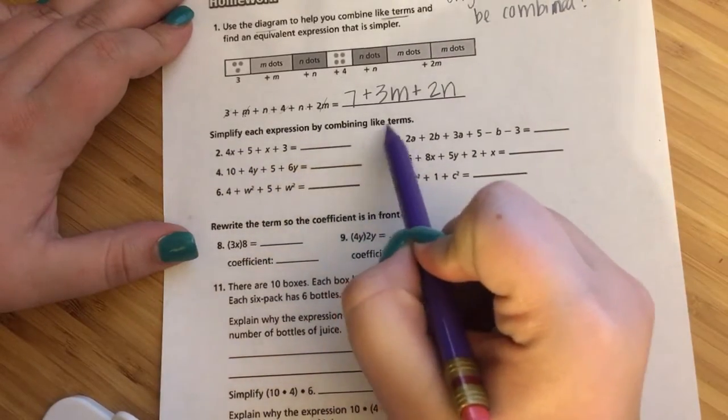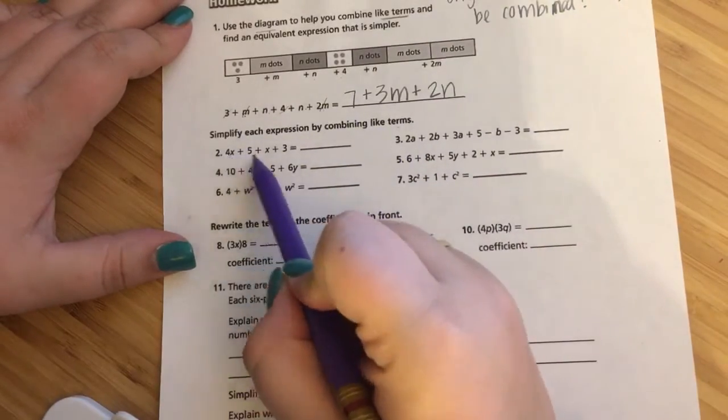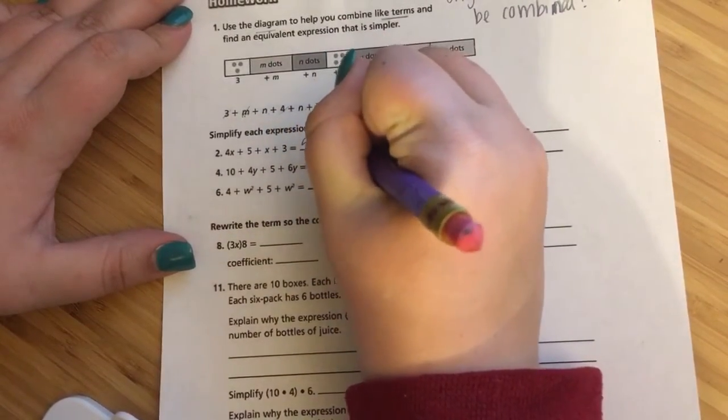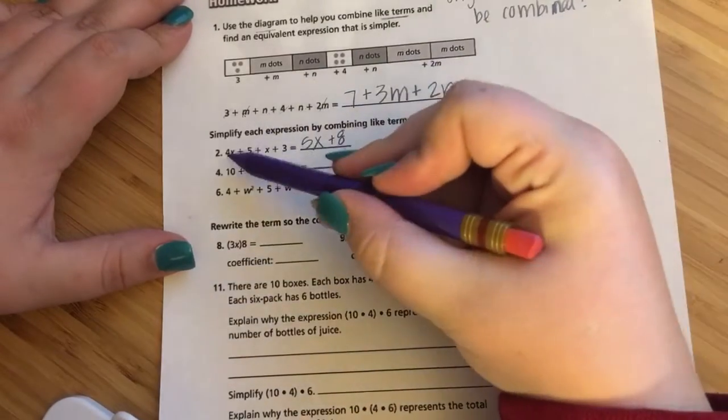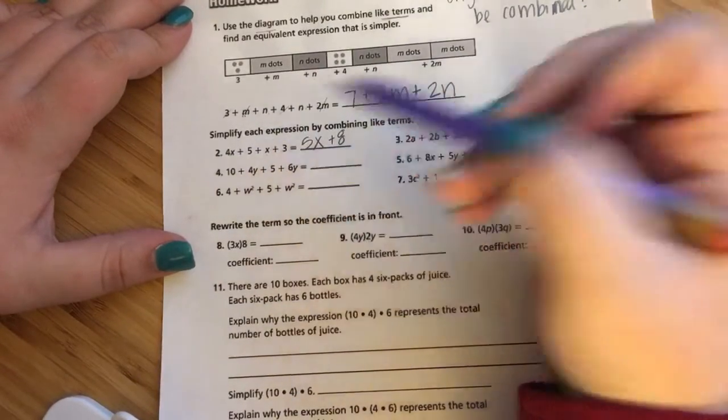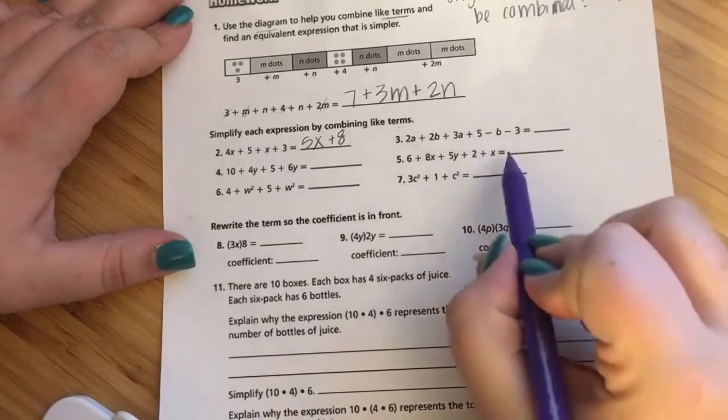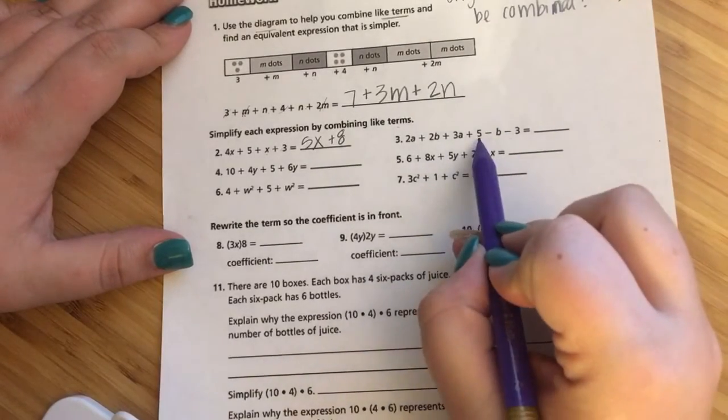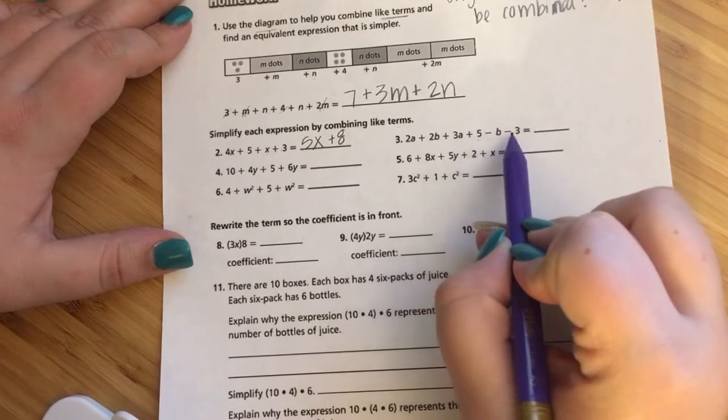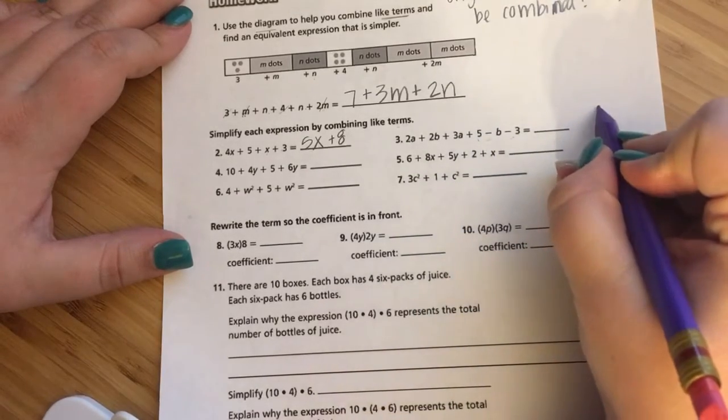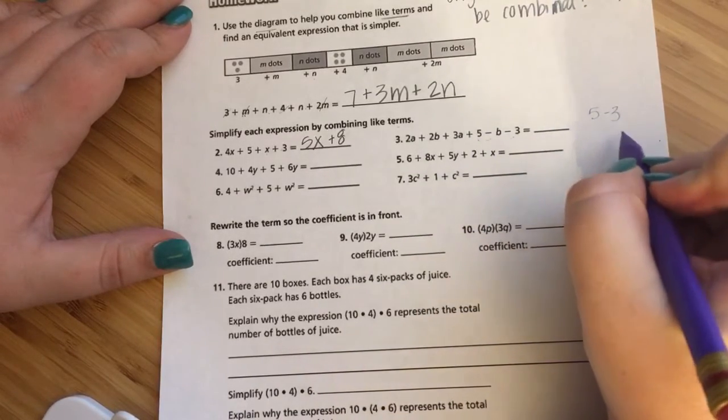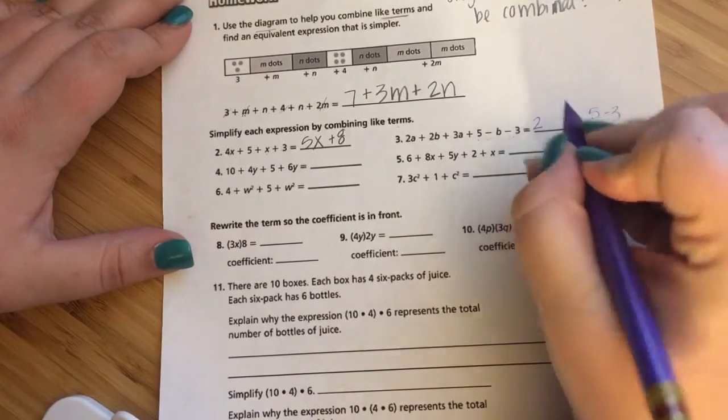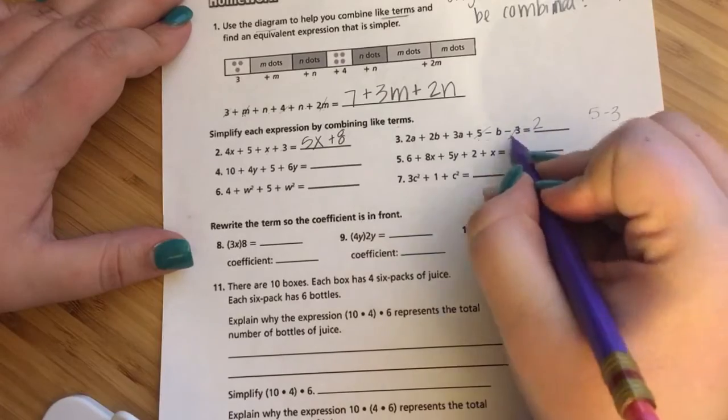So we'll be simplifying and combining like terms with numbers 2 through 7. 4X plus 5 plus X plus 3, so I make that 5X plus 8. Notice I'm still putting the X's together and the numbers together. This one has subtraction, so I have to keep in mind, this is like saying 5 minus 3. I can't add, well I could add 5 plus a negative 3, but that's just like saying 5 minus 3. It gives me 2.